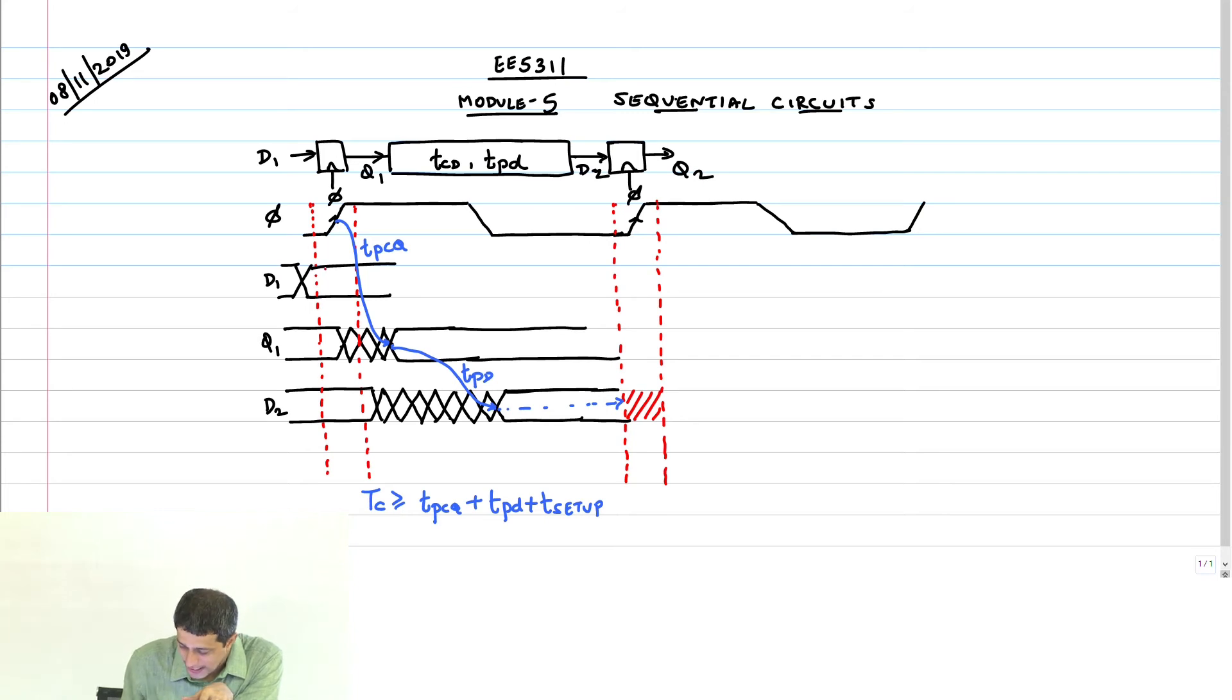Here D is free to change after this window. It should not change here, that is all, because if it changes in this window then Q1 will not get sampled correctly. Let us assume now D1 makes a change like this. Will Q1 get affected? No, because it is a flop, you have passed the sampling edge. When will Q1 get affected? In the next cycle. You come all the way here, let us assume that D1 is okay. I am going to call this event 1, and Q1 is now working on event 1, this is working on event 1.